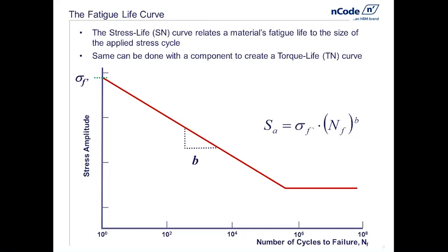On the right side here is an equation — this is what we call the Basquin SN curve formulation. A researcher in the early 1900s came up with a mathematical relationship, essentially a curve fit, between the size of the stress cycle and the number of cycles until failure. S_A is the size of the stress cycle (some people call this stress amplitude or stress range), and N_F is the number of cycles to failure. Sigma F prime is the intercept and B is the slope of this Basquin fatigue curve — stress and number of cycles to failure are related by a power law relationship. We must have an understanding of the fatigue behavior under known stress cycling to predict how long the part will last.